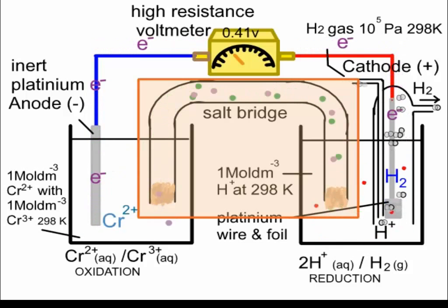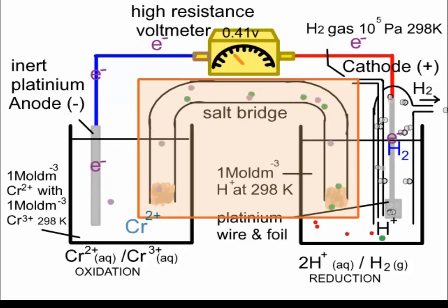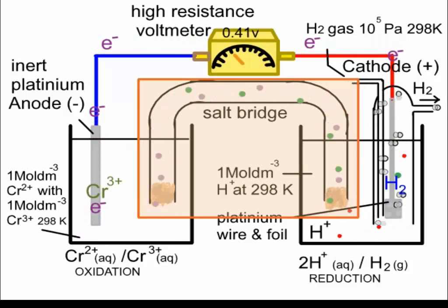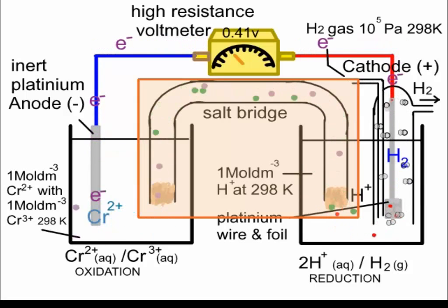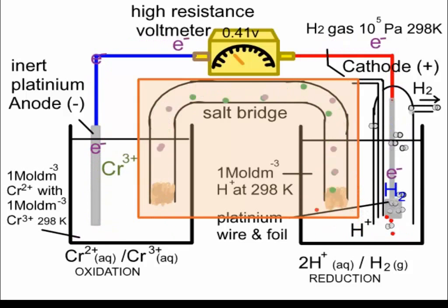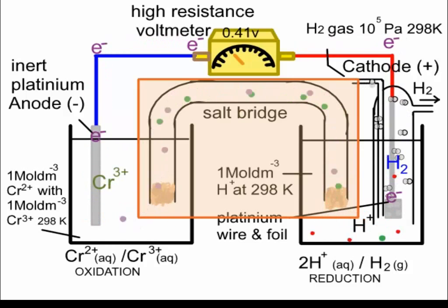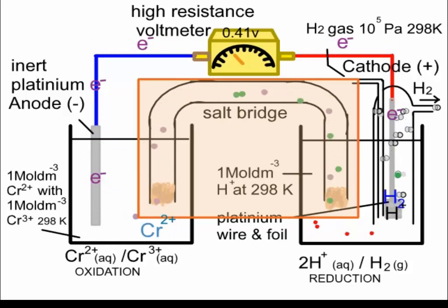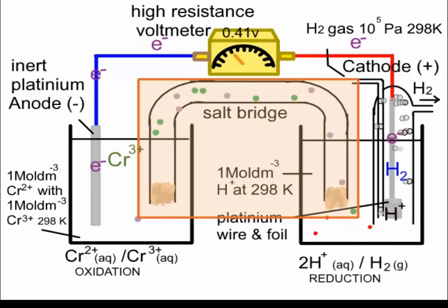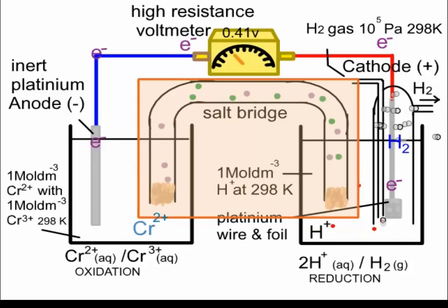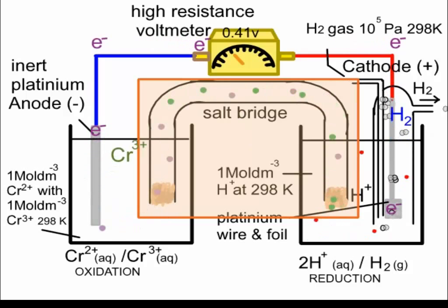Looking at the right-hand half cell, hydrogen ions are leaving the solution, so there is a drop in positive charge. This is counterbalanced by positive ions from the salt bridge — for example potassium or sodium ions — entering the solution to balance the depletion of H+ ions. In this animation, the green spheres represent the positive ions from the salt bridge.